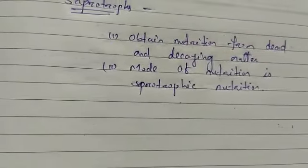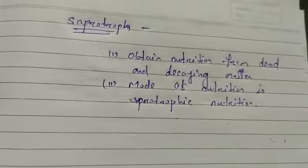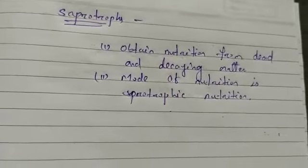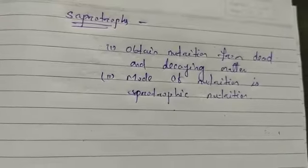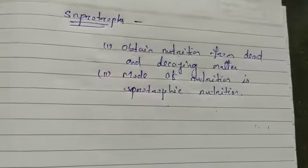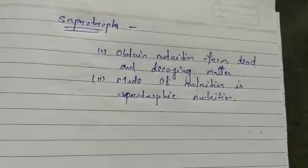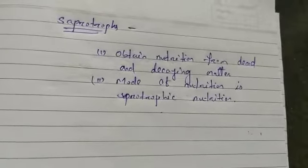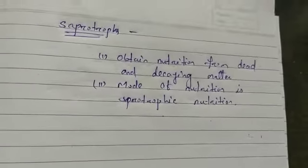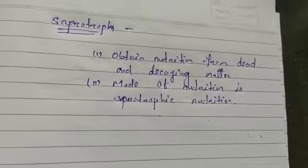Saprotrophs are called decomposers because they obtain energy by breaking down complex organic matter from dead bodies of other organisms. They are helpful for our environment because when they decompose dead bodies, they release vital chemical elements which are absorbed by autotrophs, which is good for them.